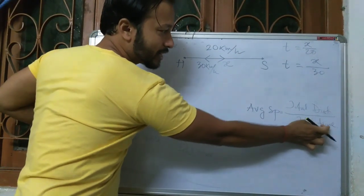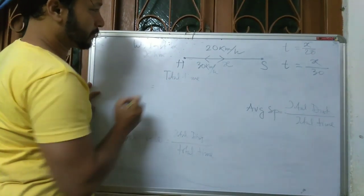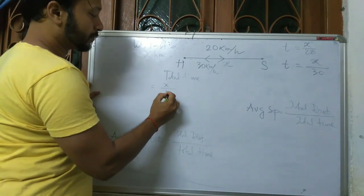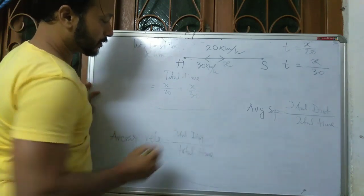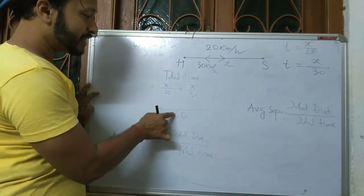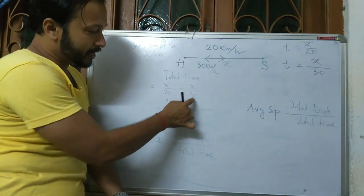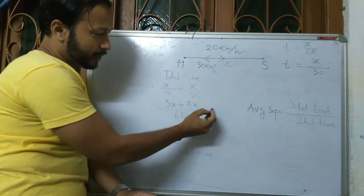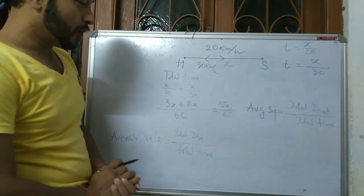We require total time. Total time equals x/20 plus x/30. Taking LCM of 60: that gives 3x/60 plus 2x/60, which equals 5x/60.